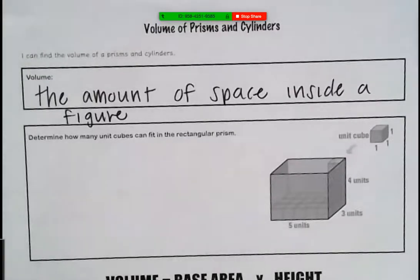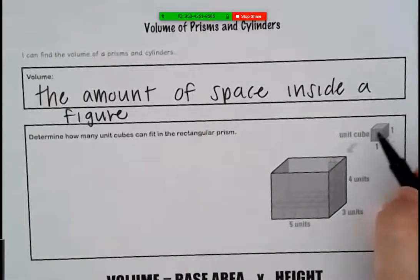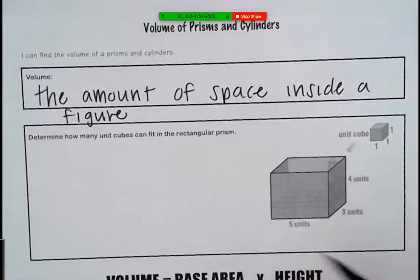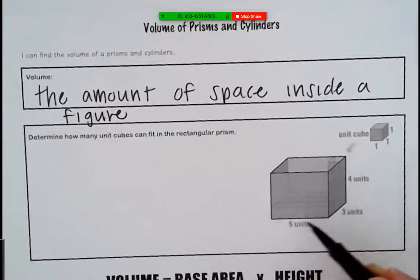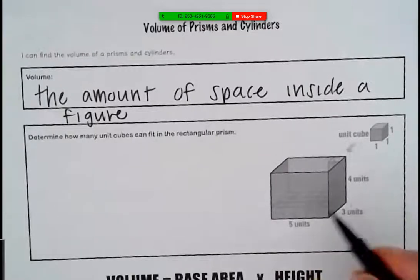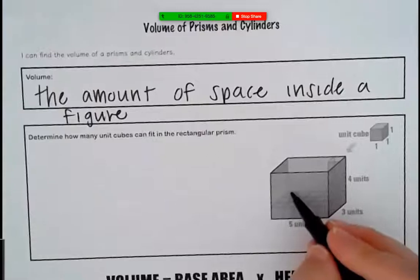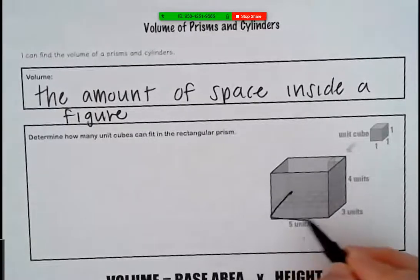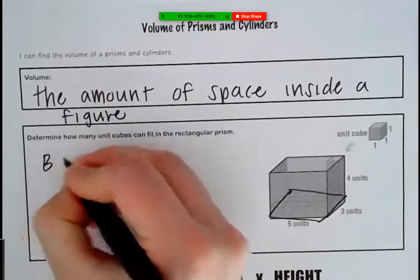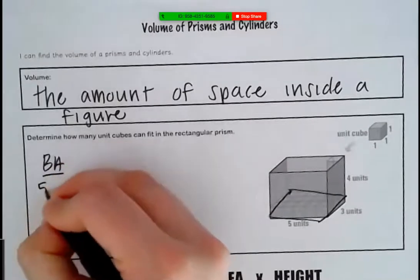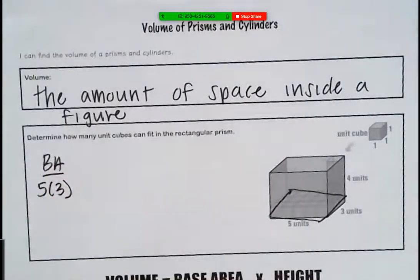So what we're trying to do is figure out how many of these unit cubes fit inside a figure. If we want to figure out how many unit cubes fit inside this rectangular prism, we have to find the base area. So what would be the area of this bottom base there? Five times three, which is 15.